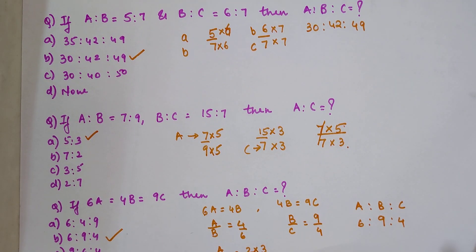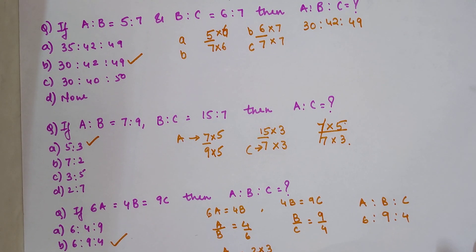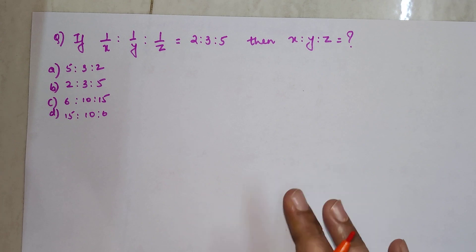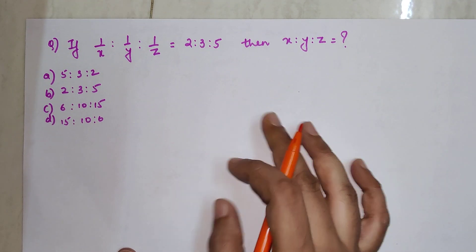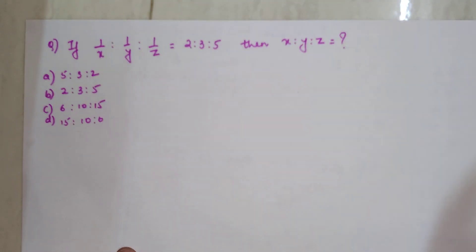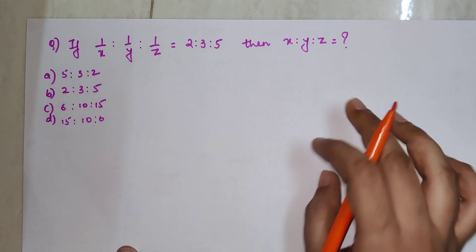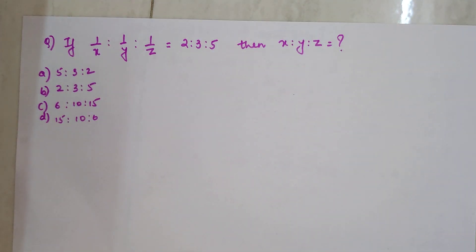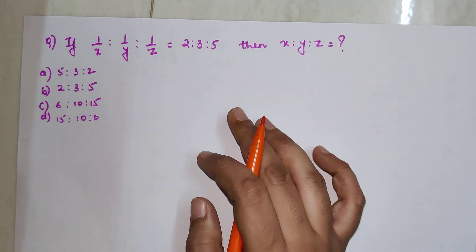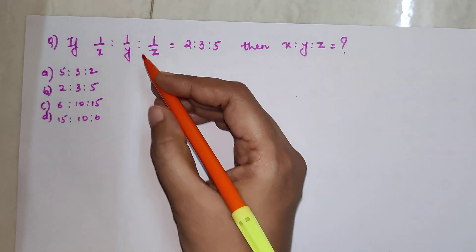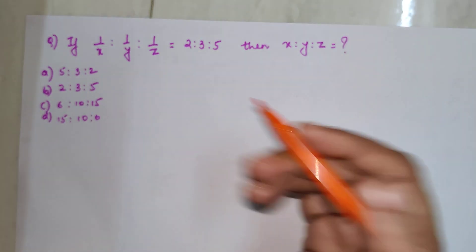Now let's come to the part where we do reciprocal questions. Here we have 1/X : 1/Y : 1/Z = 2 : 3 : 5, and we need to find the value of X is to Y is to Z. When you have something like this, you can shift it to the other side and put the reciprocal on that side.